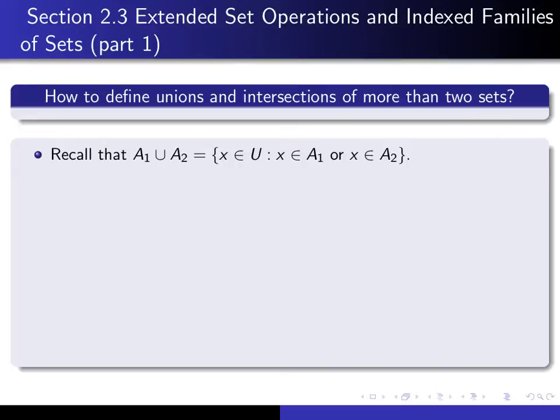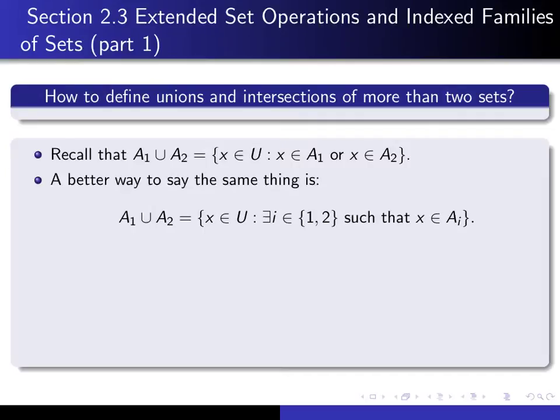For this purpose, instead of calling my sets A and B, I'm going to call them A1 and A2, in order to make it easier to generalize to more than two sets. Here's the working definition of the union of two sets A1 and A2: it's the set of all X in our universal set such that X is an element of A1 or X is an element of A2. A better way of saying the same thing is that it's the set of all X in our universal set such that there exists an index I, that's either 1 or 2, such that X is an element of A sub I.